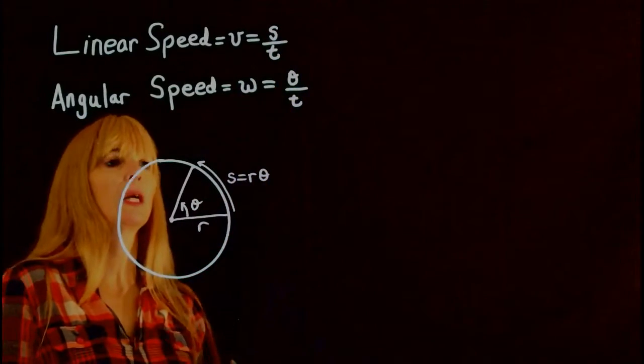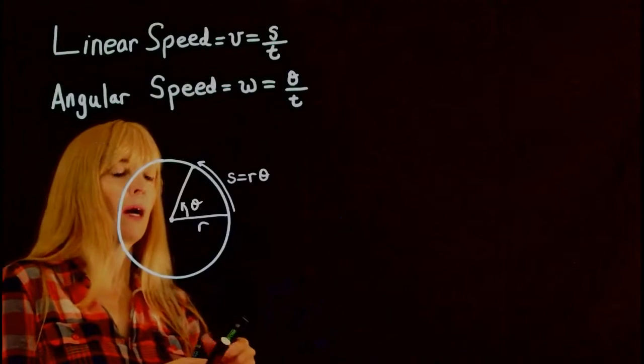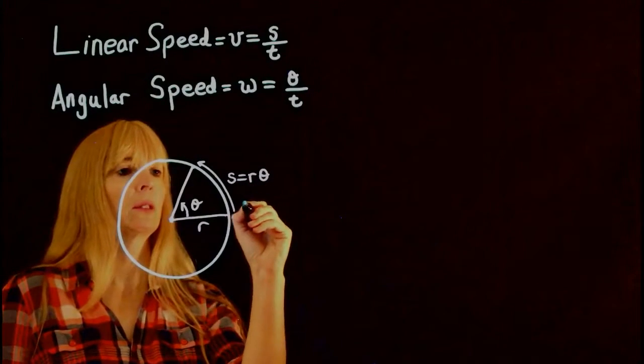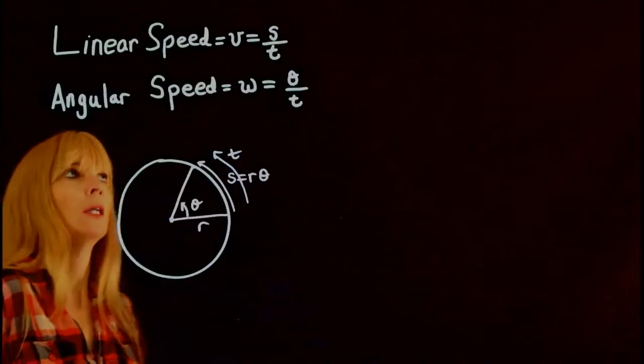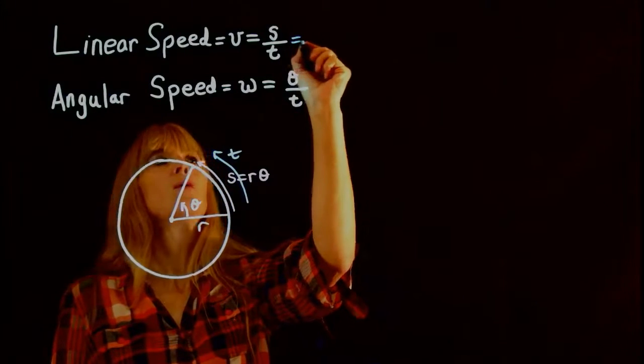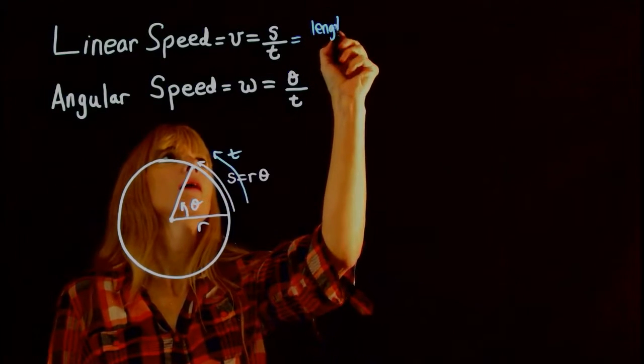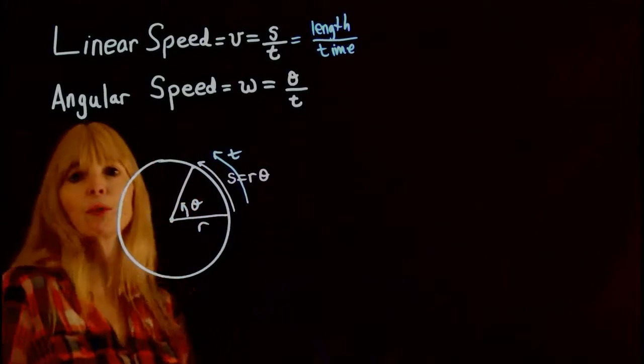Of course we have an angle theta here, so this gives me length, which means that this is actually going to be measured in length per time. And then of course the time that it actually takes to go that distance is what we're calling time. So the big difference in this case is this is going to be measured in length per time, like feet per second.